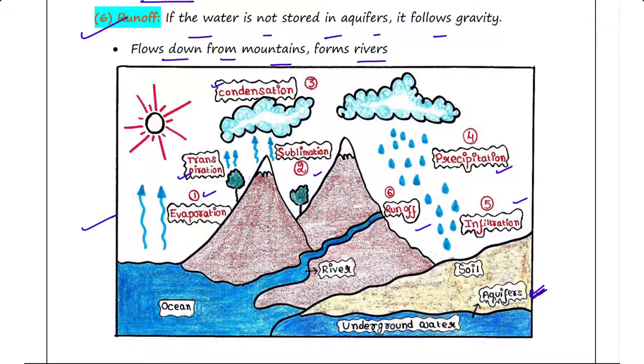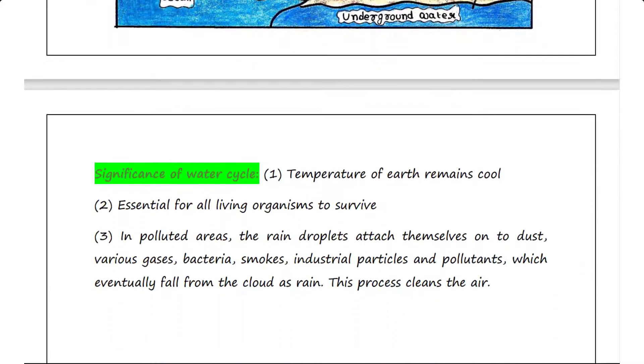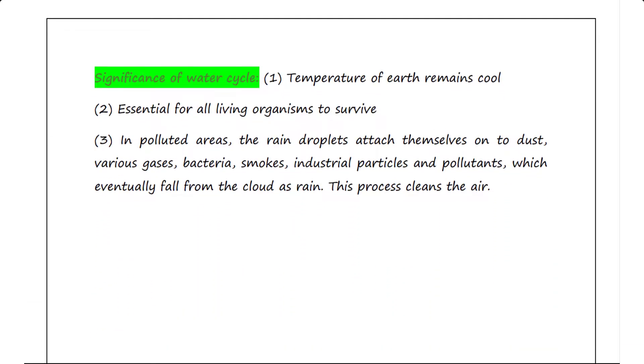Now let's talk about the significance of water cycle. Since evaporation occurs, the temperature of earth remains cool. Water cycle is essential for all living organisms to survive.